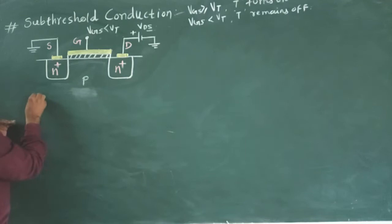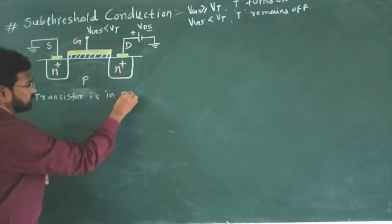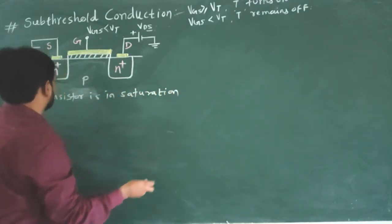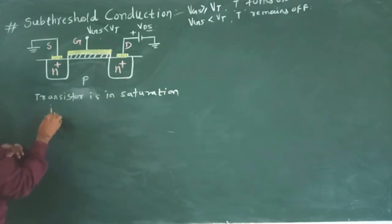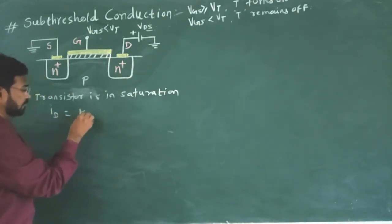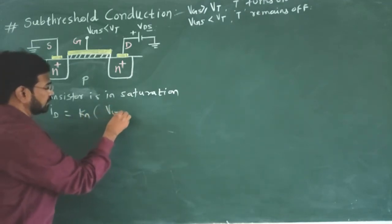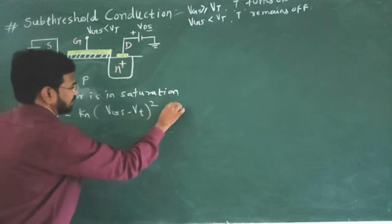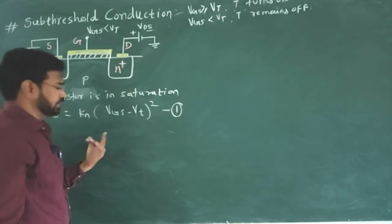When transistor is in saturation region, drain current we are writing DC drain current equation. Id is equal to Kn in bracket Vgs minus Vt square. Let us say equation 1. Already we have this equation.